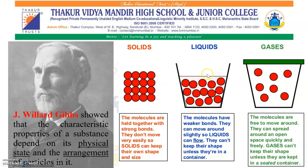Whereas in liquids, you can see there is a slight gap between the molecules — they are slightly apart from each other. So the molecules have weaker bonds and can move around slightly. This is why liquids can flow. They can't keep their shape unless they are in a container — they take the shape of the container in which they are held.